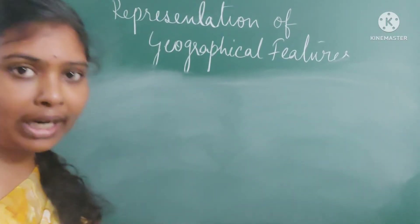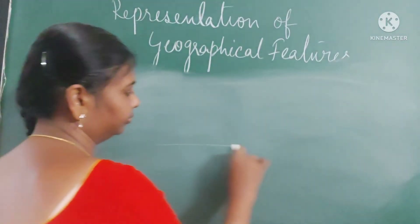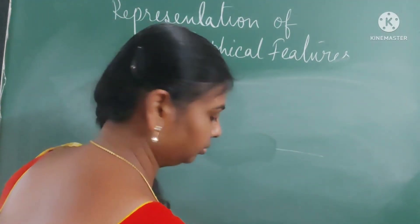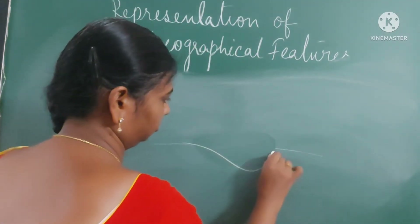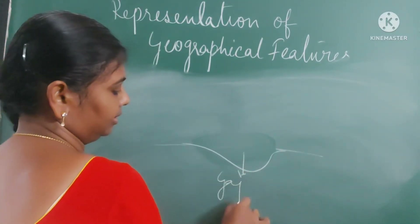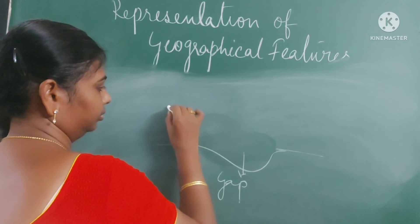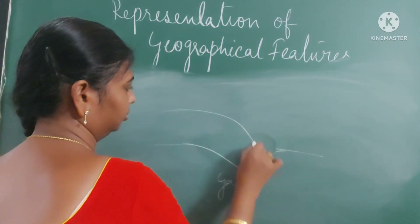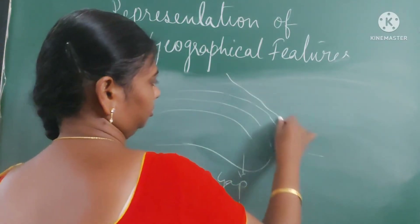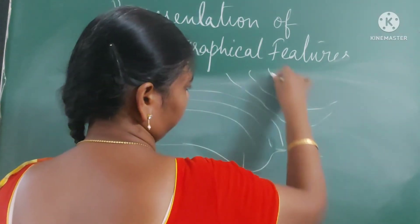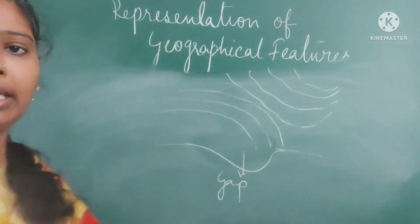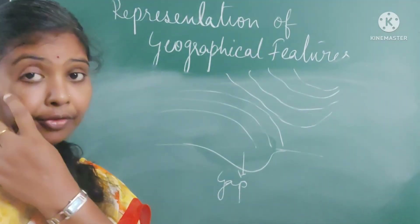Now let's see how a gap is represented. This is a gap. This is how a gap is represented with the help of contour lines.